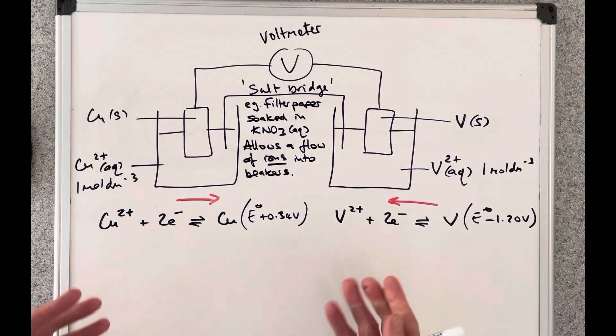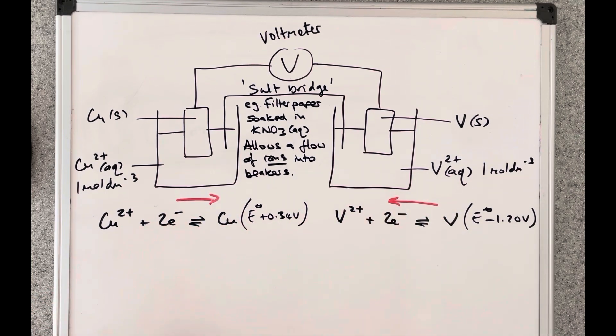So what we can do now is we can combine these two half equations together and generate the overall reaction for this electrochemical cell. Now because the electrons are both two it's an easy combination of half equations. We don't need to multiply any of them out.